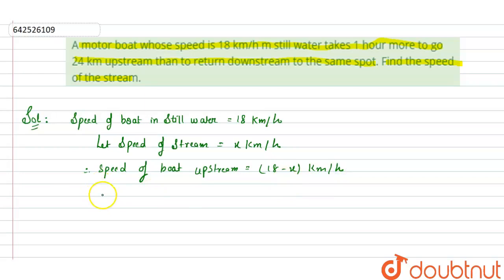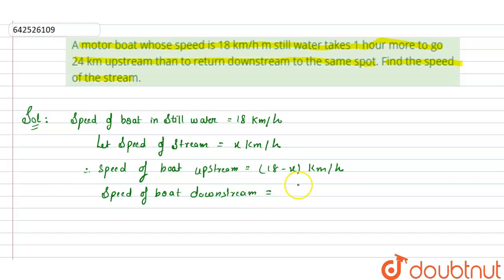And speed of boat downstream is equals to speed of boat in still water plus speed of stream, that is 18 plus x kilometers per hour.